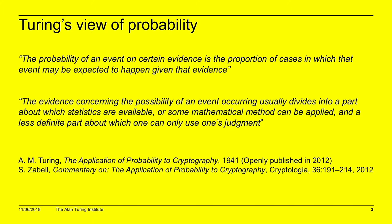The second quote provides stronger evidence: evidence concerning the possibility of an event usually divides into a part about which statistics are available — a likelihood function — and a less definite part about which one can only use one's judgment, i.e. we need to elicit prior information. We combine that with the data in a mathematically rigorous way by utilizing Bayes' rule to produce a posterior distribution of interest. So Turing was definitely a Bayesian statistician, which in my opinion is quite cool and not many people know.